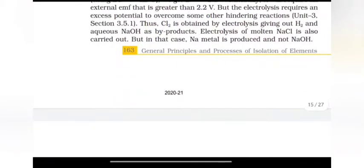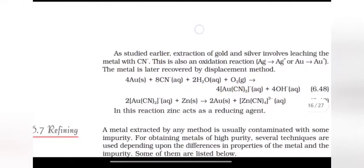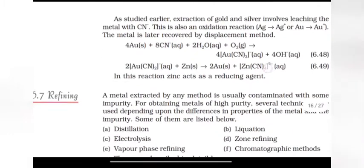Electrolysis of molten NaCl is also carried out. But in that case, Na metal is produced and not NaOH. As studied earlier, extraction of gold and silver involves leaching the metal with CN-. This is also oxidation reaction. The metal is later recovered by displacement method. In this reaction, Zinc acts as a reducing agent.